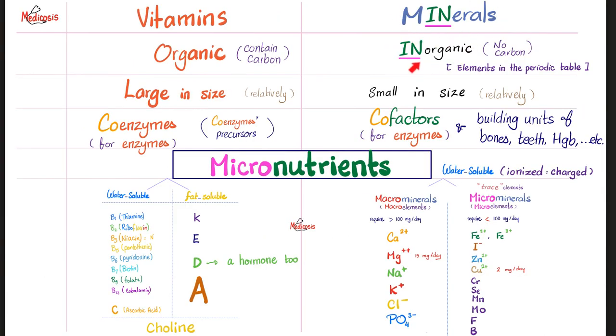Minerals are inorganic. This is the chemistry that deals with anything else but carbon. Minerals are relatively smaller in size compared to vitamins. Minerals are cofactors for enzymes. They are also building units. For example, calcium in my bones, teeth, iron in my hemoglobin, copper in my ceruloplasmin, iron in my myoglobin.